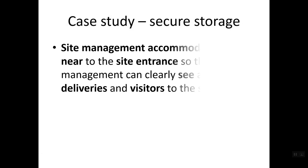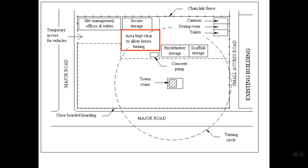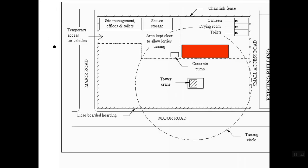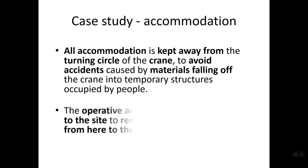Accommodation is clearly marked in the case study. An area is kept for vehicle turning for lorries and containers. There is a designated place for the concrete pump because when concreting upper floors you need to pump concrete through tubes rather than directly from the concrete truck, so a specific location must be allocated for the concrete pump and for concrete testing.